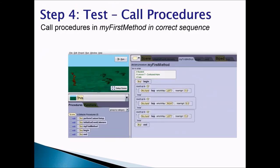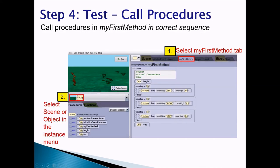Step four, test. Call procedures. You would call your procedures in myFirstMethod in the correct sequence. So in order to do that, the first step you have to do is select myFirstMethod tab. The second step you would do is select scene or object in the instance menu, because we have our begin and end in a scene, and then we have a hop in a hare. So select either the scene or the object. Step three, drag the procedures into myFirstMethod in the editor. So you would drag and drop it into the editor area. And the last step is click on run to test to see if your program works correctly or not.